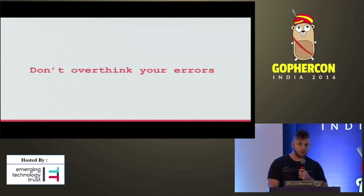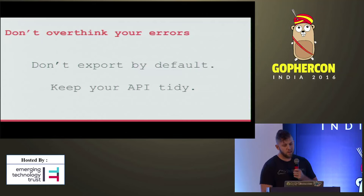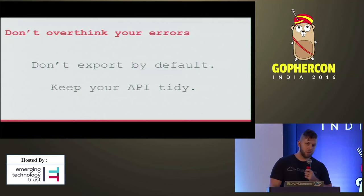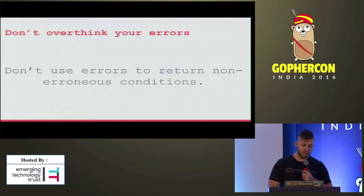Don't overthink your errors. Don't export by default. Keep your API tidy. Don't use errors to return non-erroneous conditions. Until proven otherwise, just bubble your errors with pkg/errors. And then when you discover a specific case, undo it. Keep it simple. YAGNI. That's the end.